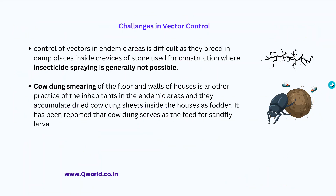Challenges in vector control include the fact that in endemic areas, sandflies breed in damp places inside crevices of stones used in construction of houses and buildings, making spraying not always possible. Additionally, in rural areas — and some urban areas — cow dung smearing of floors and walls is a common habit. This dried cow dung acts as fodder, and it has been reported that sandfly larvae commonly feed on it, making it a significant sandfly breeding site.